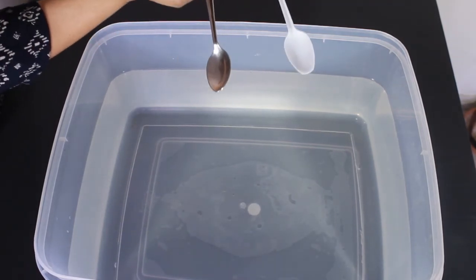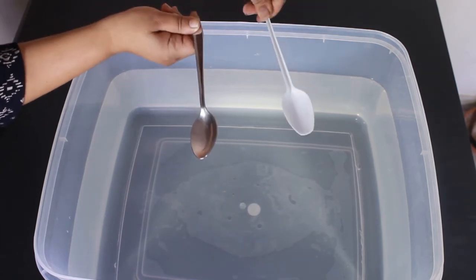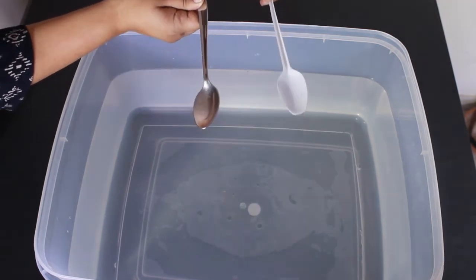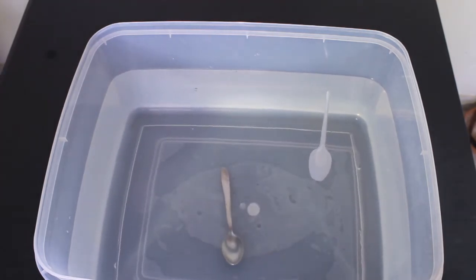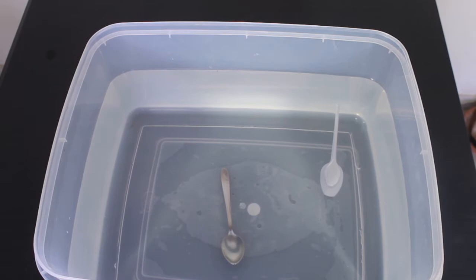Let us throw these same spoons in the water. The plastic spoon floats whereas the steel spoon sinks. Some objects that fall through air float on water. Why does the plastic spoon act differently in water?